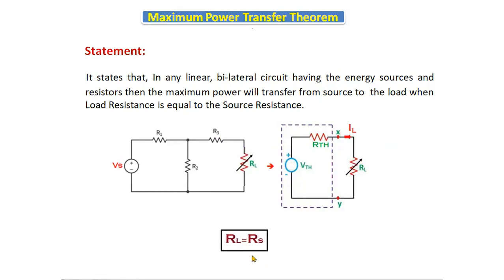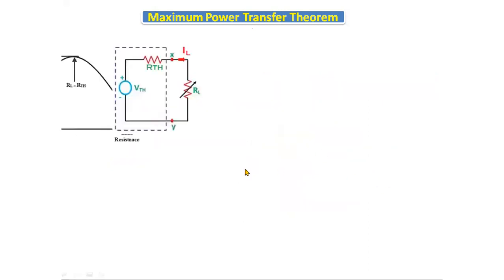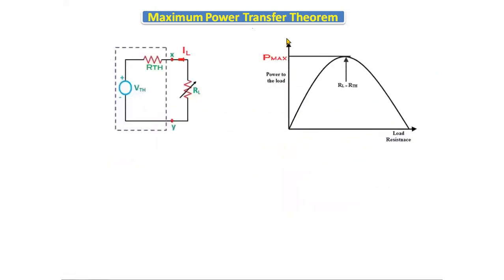The condition of the Maximum Power Transfer Theorem is that load resistance equals source resistance RS, which we also call Rth — the Thevenin's resistance. On the graph, the x-axis is load resistor RL and the y-axis is power. At the point where RL equals Rth, we get the maximum power.